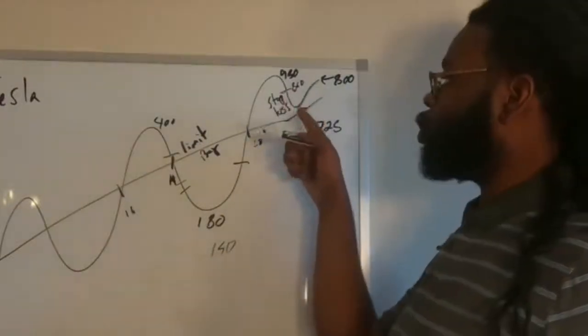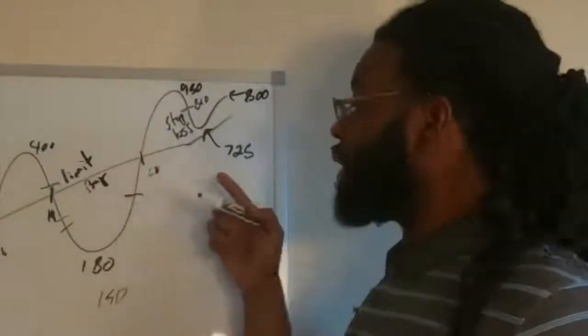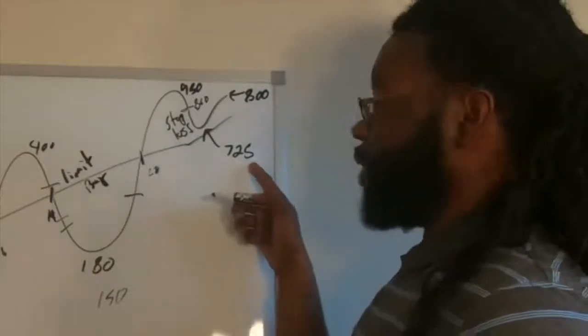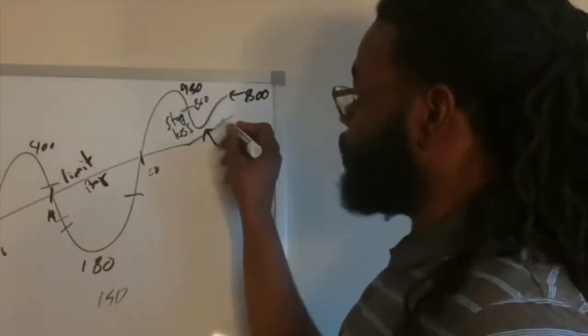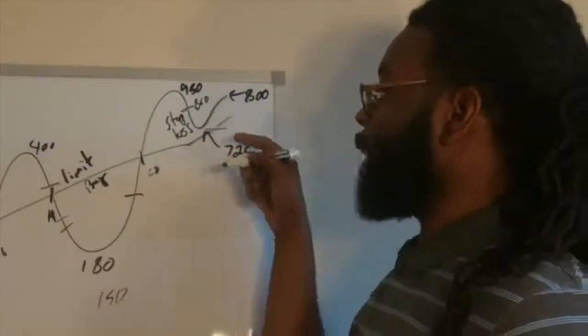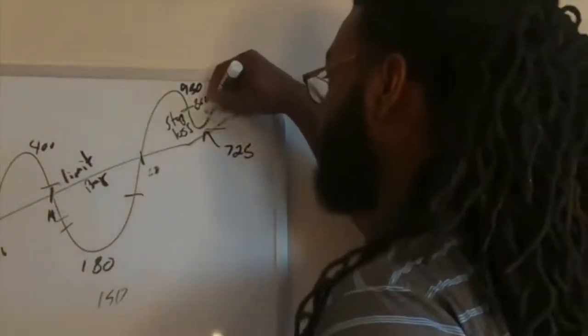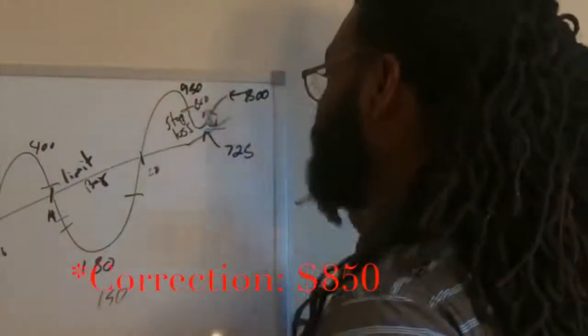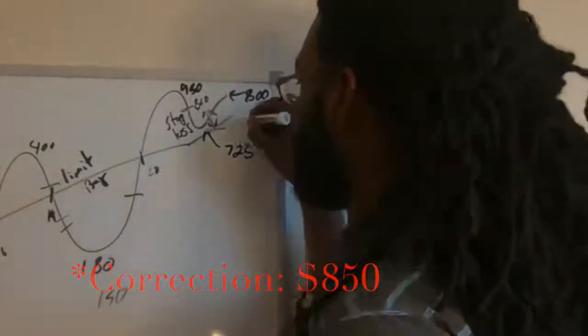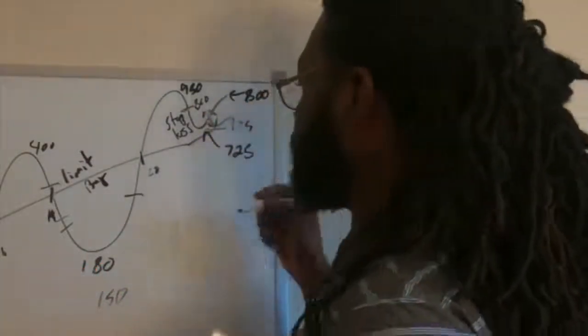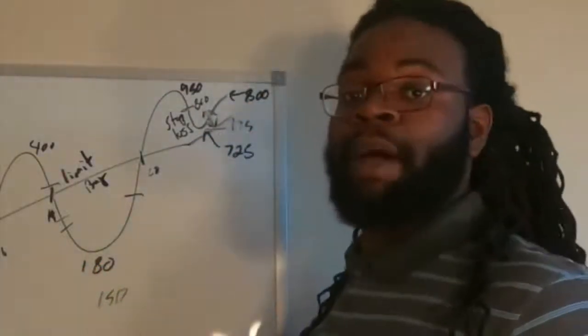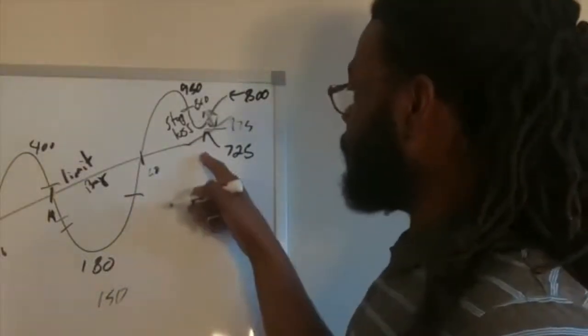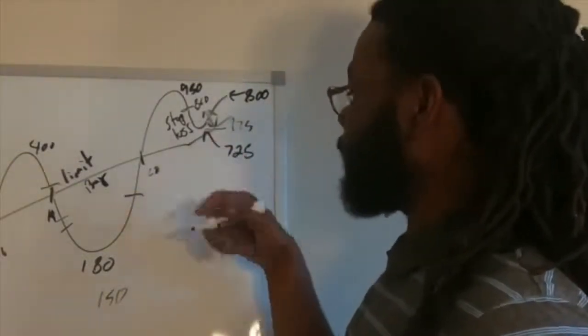Once I sold at $850, I also had a limit buy at $725. So once the stock hit $725, I purchased back those same stocks that I had just sold for $850, meaning that I had made $125 on each one of those stocks, and I still had the same amount of Tesla stock left in my portfolio.